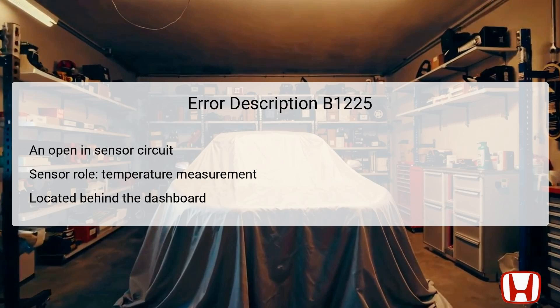The error description for DTC B1225 highlights that there is an open in the temperature sensor circuit. The in-car temperature sensor has a vital role as it measures the air temperature inside the vehicle, allowing the climate control system to adjust appropriately. This sensor is typically positioned behind the dashboard, often near the air vents, to obtain an accurate reading of the cabin environment. If the sensor is malfunctioning or not sending proper signals, technicians can proceed to identify and rectify the electrical circuits connected to the sensor to restore functionality.